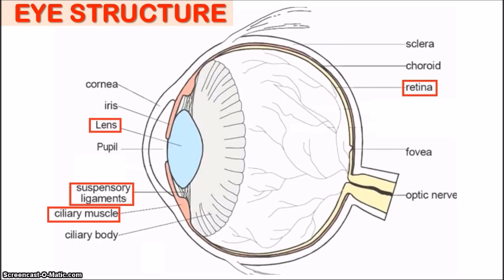Now the fovea is a special point on the retina where light rays usually focus. It is concentrated with cone cells that would allow us to see color when we have a lot of light. The final part, the optic nerve, is important because it will receive the information from the retina as nervous impulses and send them to the brain, where the brain would process the information and allow us to see the image.